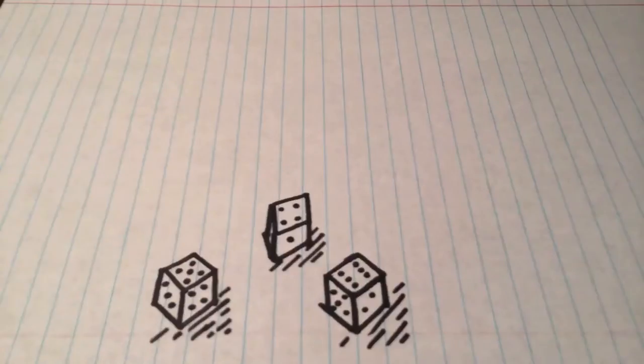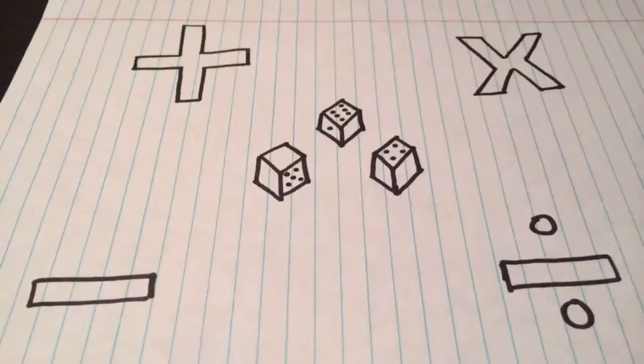With these numbers, use a combination of addition, subtraction, multiplication, division, exponents, and roots to knock off the numbers 1 through 36.